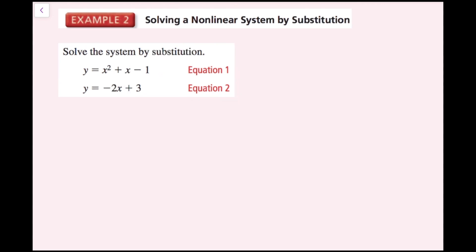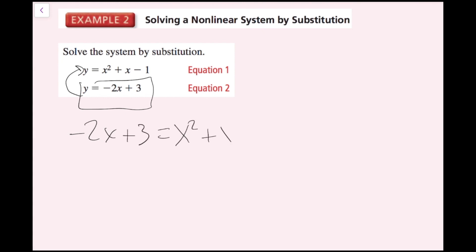For example 2, we're going to solve this system by using substitution. Substitution is when we take one equation and plug it into the other equation. I see that I have two isolated y variables, so I'm going to take one and plug it in, giving me: negative 2x plus 3 equals x squared plus x minus 1.